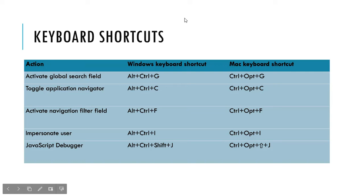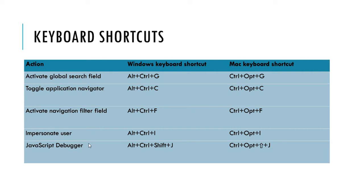These are the various keyboard shortcuts in ServiceNow that are generally used. The first is activate global search field: Alt+Ctrl+G for Windows and Ctrl+Option+G on Mac. Other shortcuts include: toggle application navigator, activate navigation filter field, impersonate user, and JavaScript debugger.